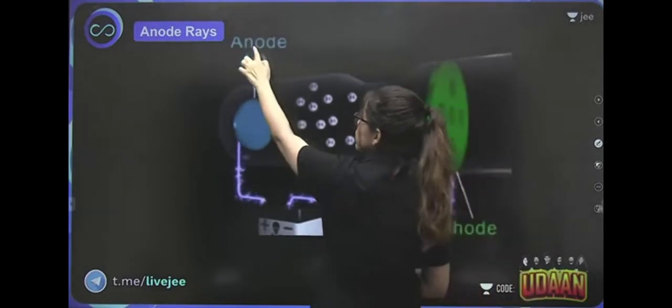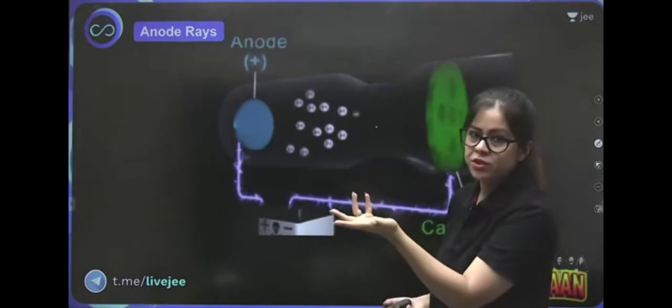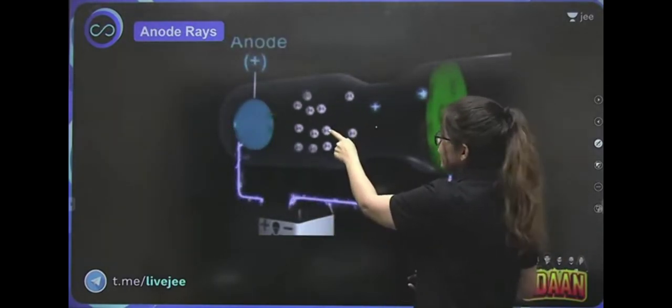If the electrons are removed from the atom, positive charge remains. In addition to that, the electrons are knocked out from the electron shells.